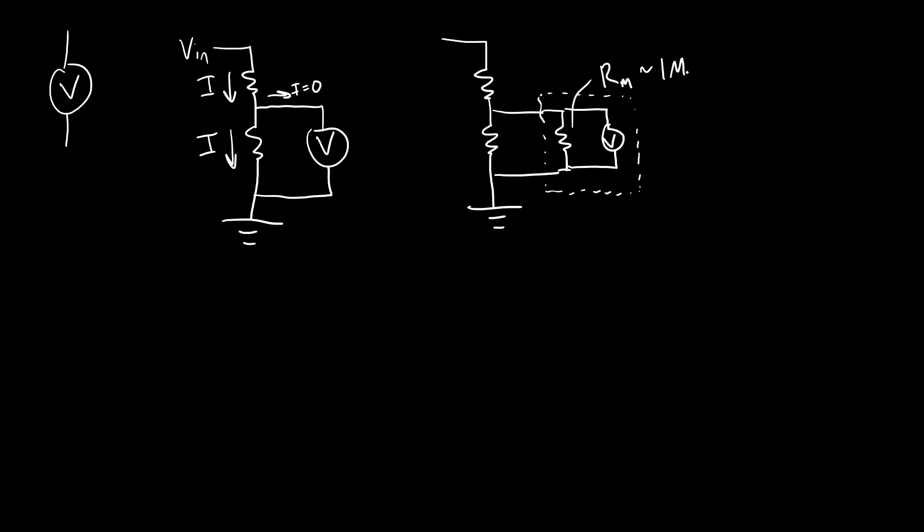So somewhere in the one to 10 megaohm range. So it siphons off a very, very small amount of current, we'll call that IM, but it's not zero. So it does affect your measurement, the circuit you're measuring a little bit.